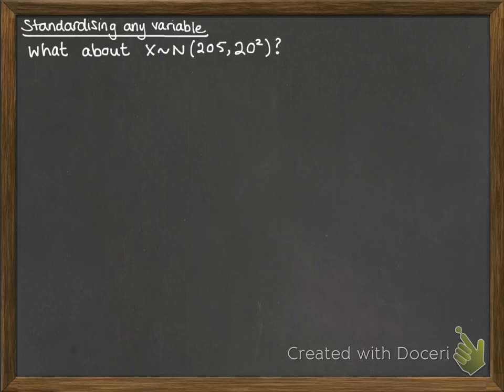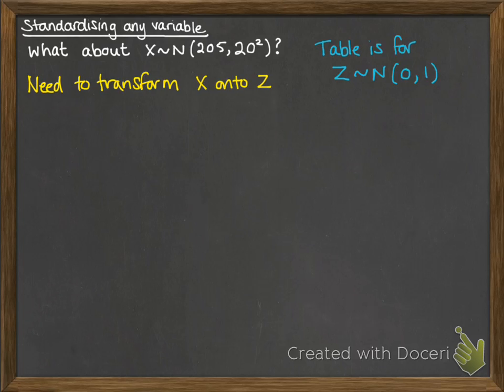So what about if we have something that's not the standardized format? This one we've got x following a normal distribution with a mean of 205 and a standard deviation of 20. So we need to know how to deal with this. We can't look that up on the table because the table is only for that z distribution. So we need to transform x onto z in some way so that we can use that table to look up an equivalent amount.